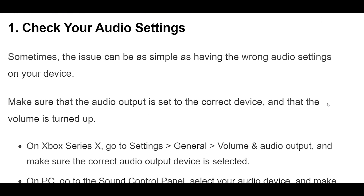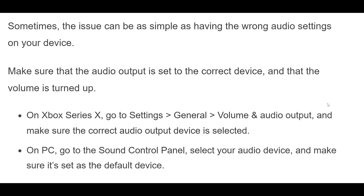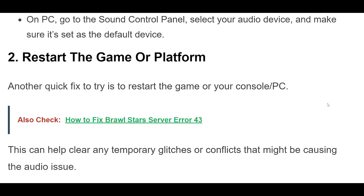1. Sometimes the issue can be as simple as having the wrong audio settings on your device. Make sure that the audio output is set to the correct device and that the volume is turned up. On Xbox Series X, go to Settings, General, Volume and Audio Output, and make sure the correct audio output device is selected. On PC, go to the Sound Control Panel, select your audio device, and make sure it's set as the default device.